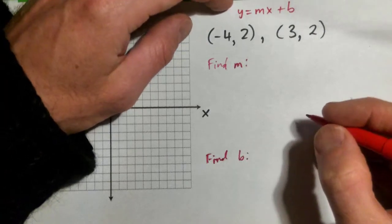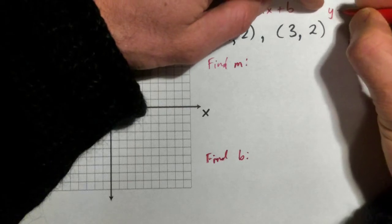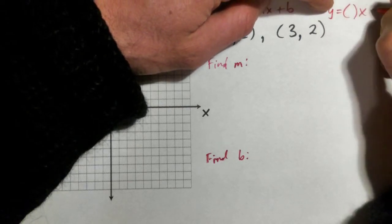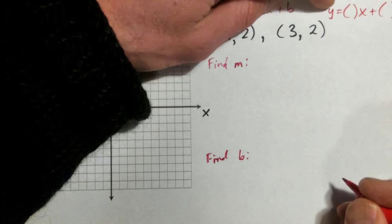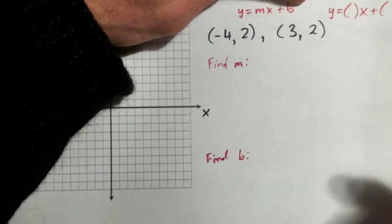So finding m. In other words, our answer is going to be y equals some number times x plus some other number, right? If we find m and b, we can plug those numbers in and then we have our equation.